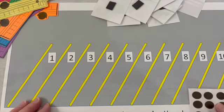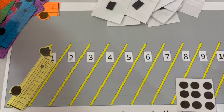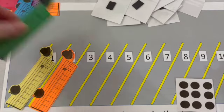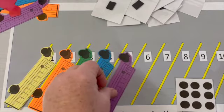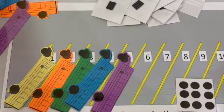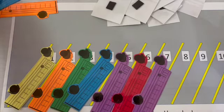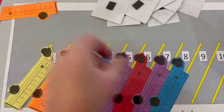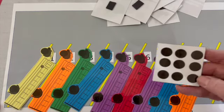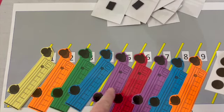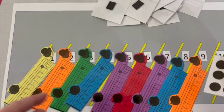Nine. I need to put nine buses in my parking lot. One, again every time I say a number I move a bus. Two, three, four, five, six, seven, eight, nine. Nine buses. One, two, three, four, five, six, seven, eight, nine. Nine dots, nine buses.